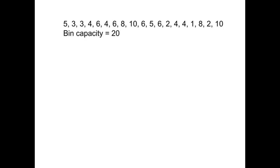For our first bin, we can see that we've got a 10 and a 10. That makes 20, so I'm going to cross them off as I go, and that way I'll know if I've got them covered or not.